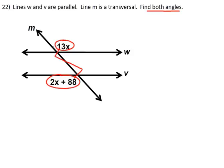If you just look at the shapes of the angles, this is an obtuse and this is an obtuse. And you also should know the name, why these are congruent. So you're looking at 13x and 2x plus 88. They are alternate exterior angles.